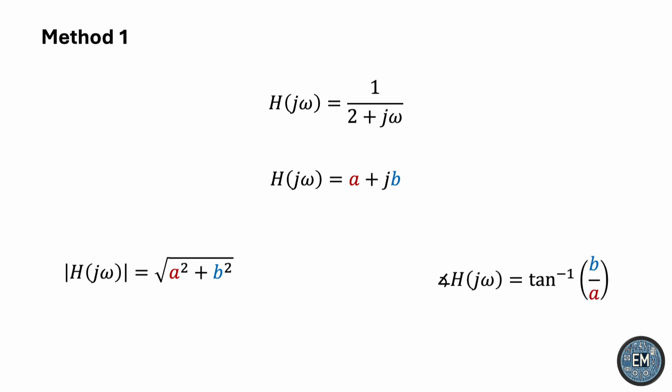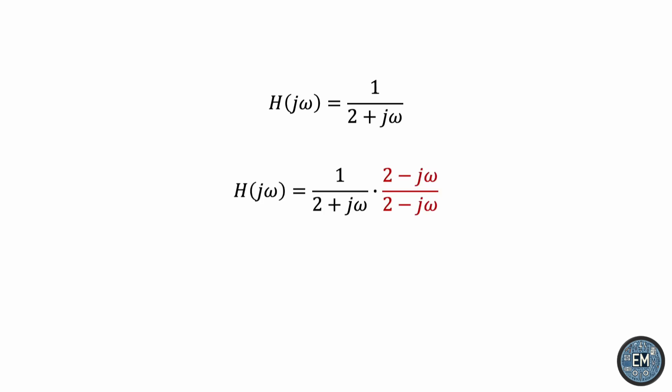To do this conversion, we need to multiply the top and bottom by the complex conjugate of the denominator. Doing so, we get the following result.